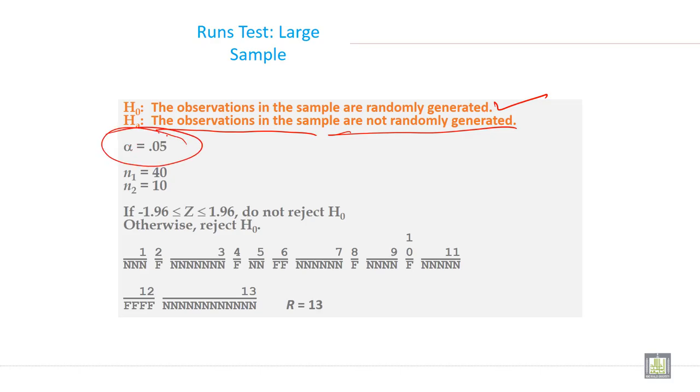Now here, the null hypothesis will be: the observations in the sample are randomly generated. And the alternate hypothesis will be: the observations in the sample are not randomly generated. Significance level is given, type 1 error rate 0.05.